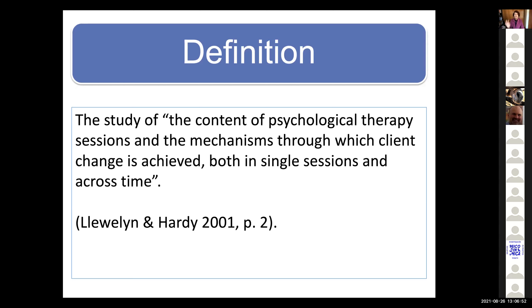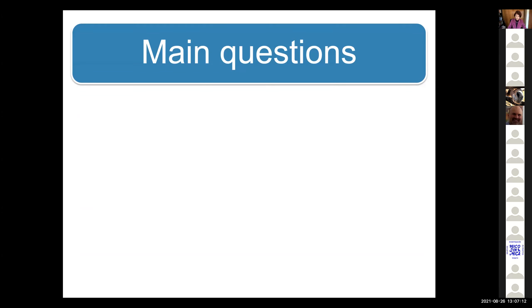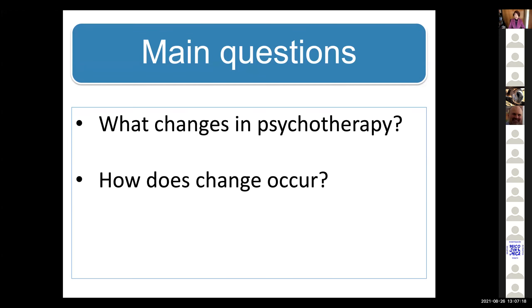The main focus of process research is on change mechanisms. We have two categories: studies that focus on sessions or even on episodes within sessions, and also studies that focus on the whole therapy. The main questions of psychotherapy process research are very simple: what changes in psychotherapy, and how does change occur? But these simple questions have a lot of difficulties on the methodological level, as you will see.